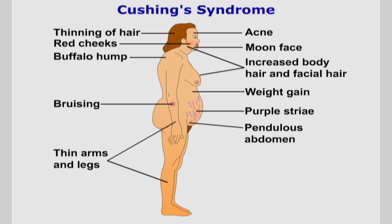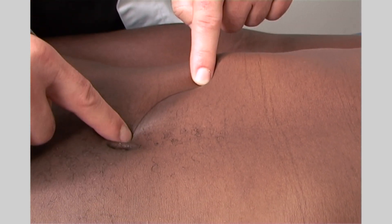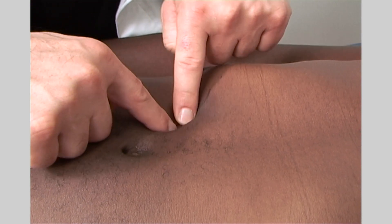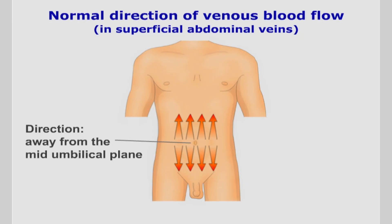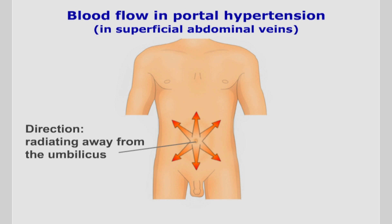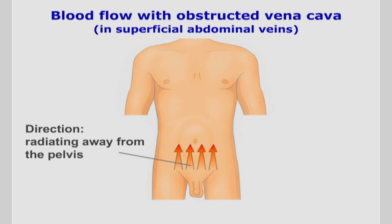Look for any lines or stretch marks and try to differentiate the purplish-pink striae associated with Cushing's syndrome from simple stretch marks. The appearance of veins over the abdomen is not usual. You may map the direction of flow by emptying them — press your index fingers close to each other, then lift one finger to observe refill. In normal circulation, flow is away from the midline horizontally over the umbilicus. In portal hypertension, venous flow radiates away from the umbilicus. In obstructed vena cava, the flow is directed superiorly from the pelvic region.